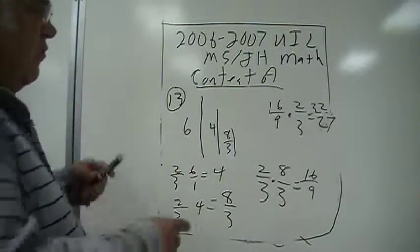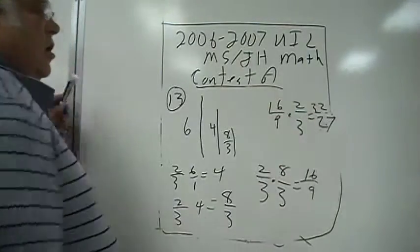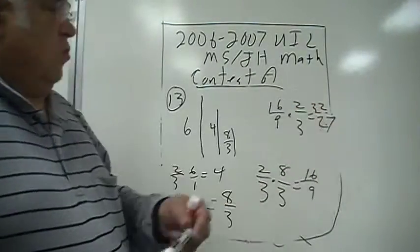16 over nine times two-thirds, 32 over 27. That's definitely more than one still.